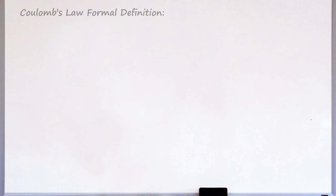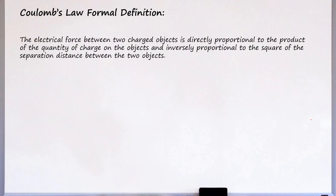That's it. Because of those lessons we now have a formal definition for Coulomb's Law. The electrical force between two charged objects is directly proportional to the product of the quantity of charge of the objects and inversely proportional to the square of the separation distance between the two objects. A long definition, but you can summarize it in this one formula.